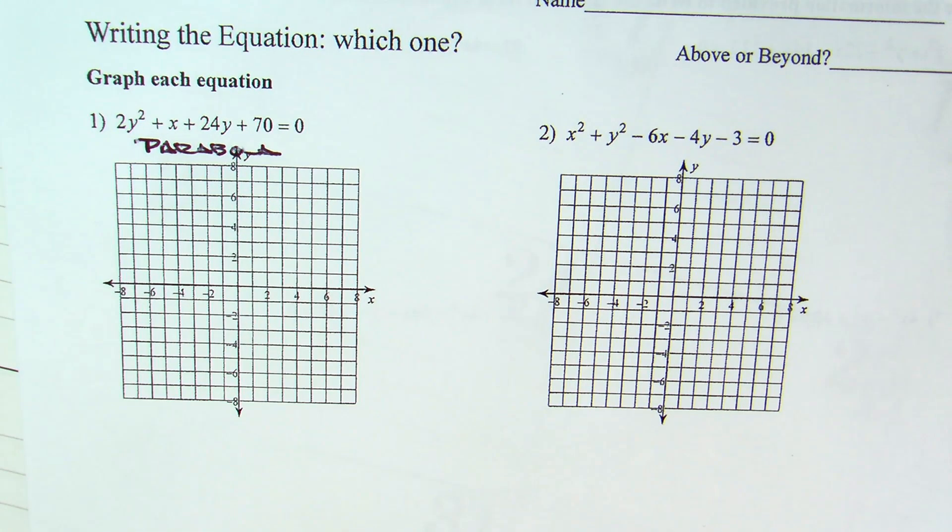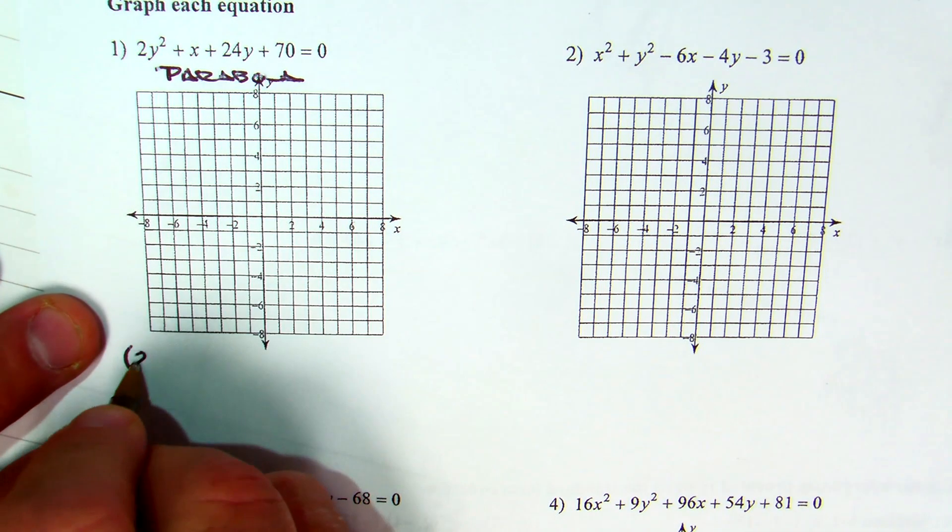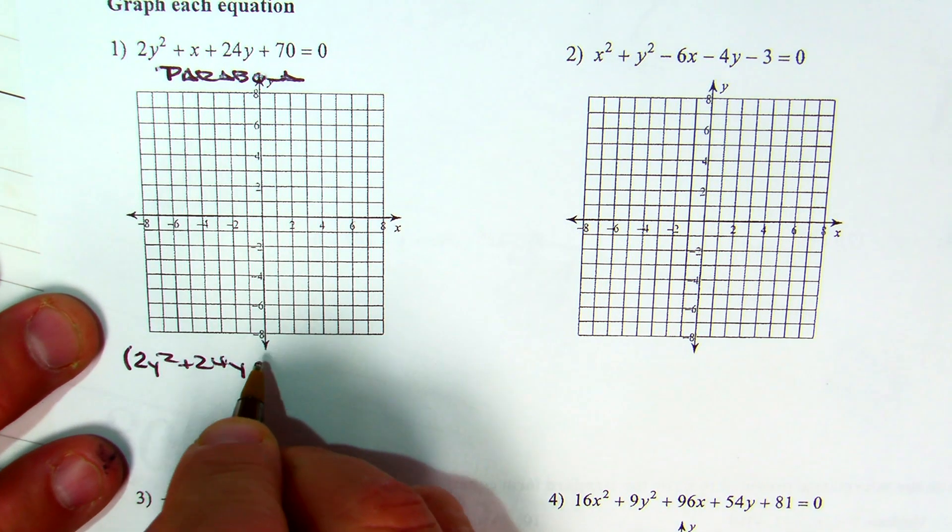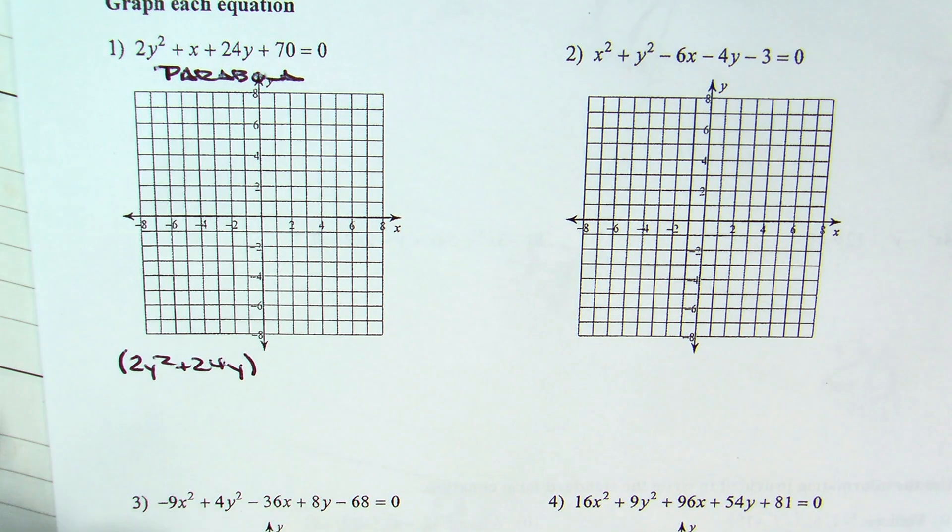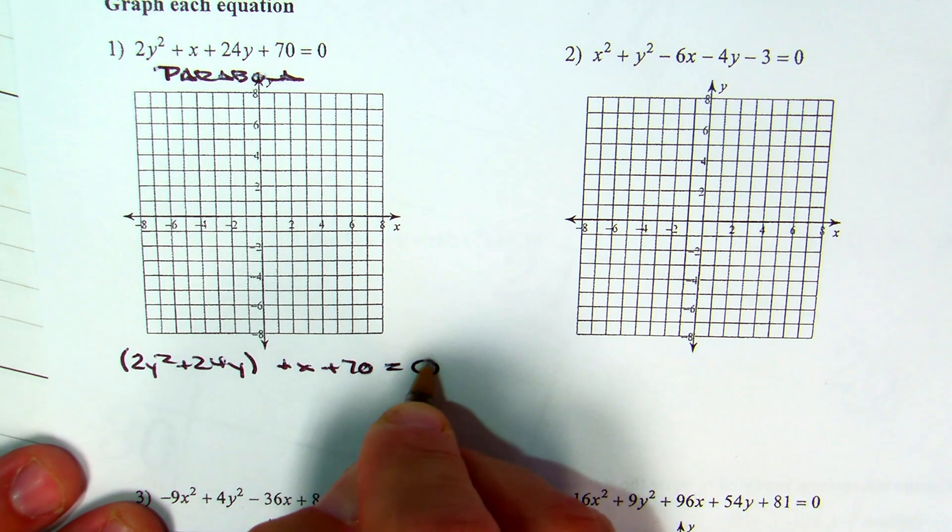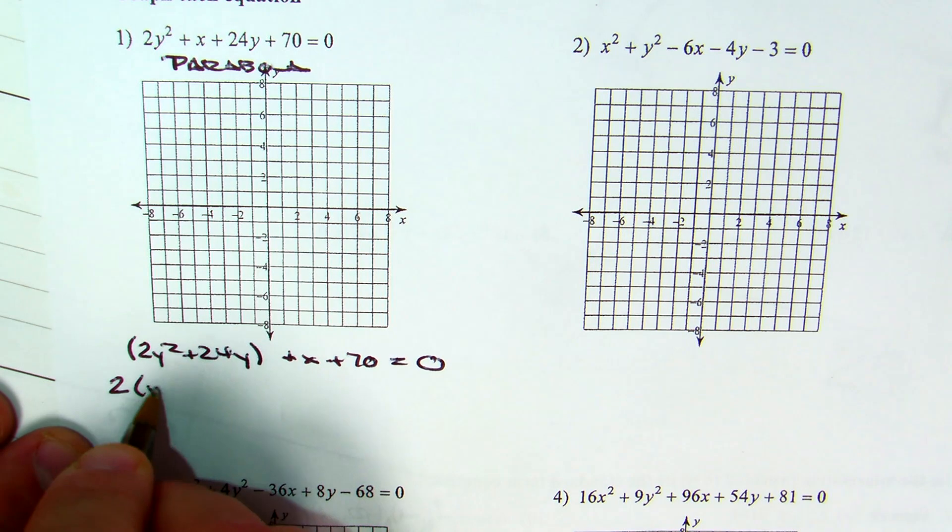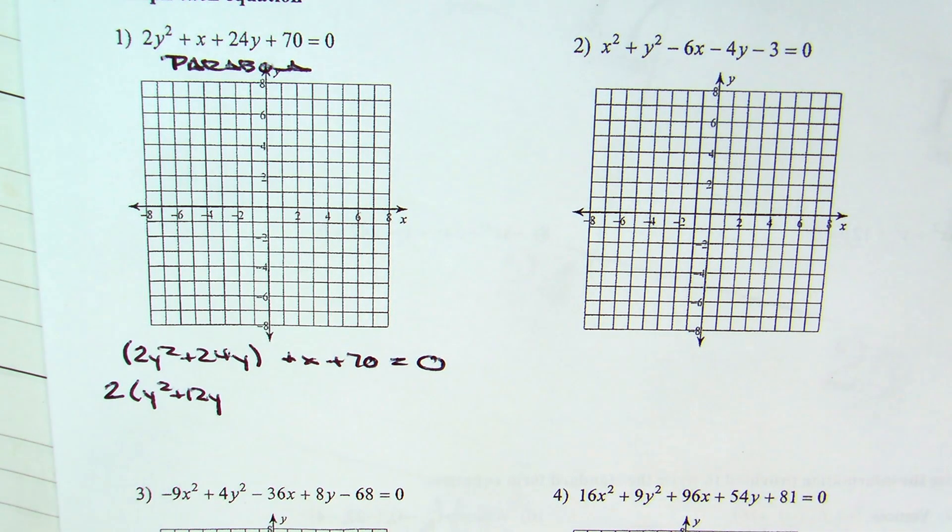All right. So, now I go to work. 2y squared plus 24y plus x plus 70 equals 0. Does that make sense? First off, what's the coefficient of the y squared? 2. So, that's what I'm pulling out. What's half of 12? 6. 6 squared.